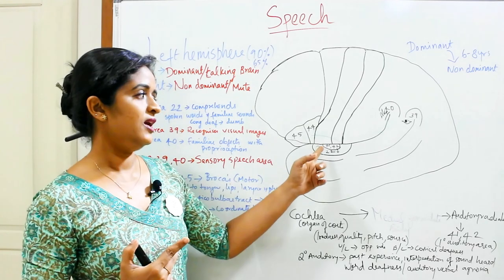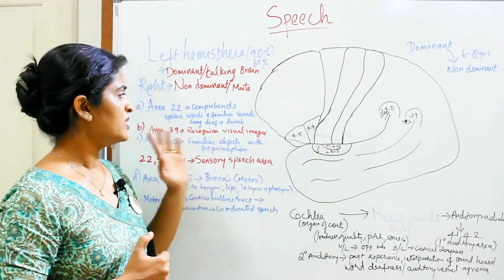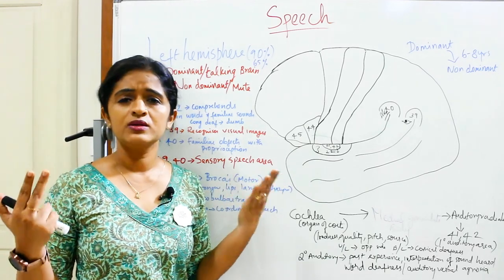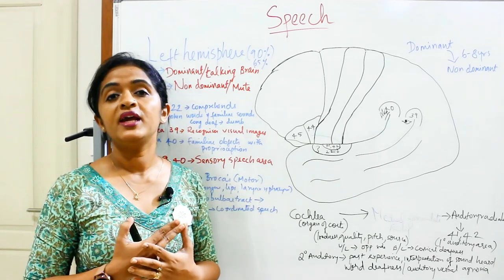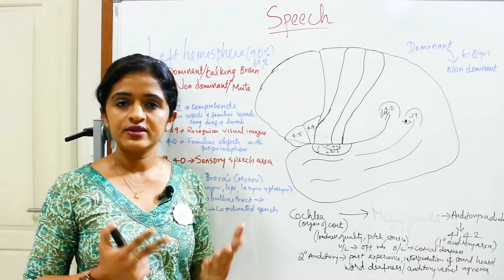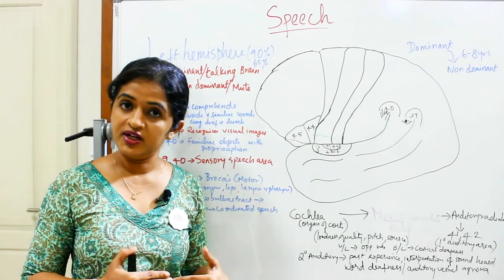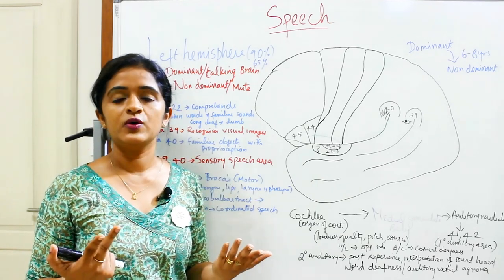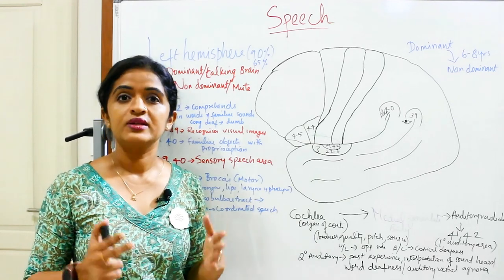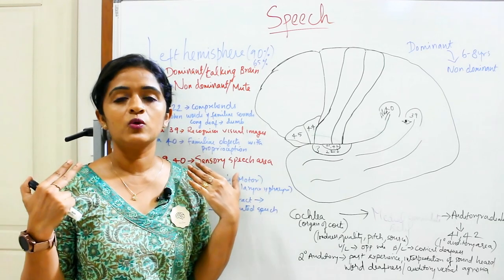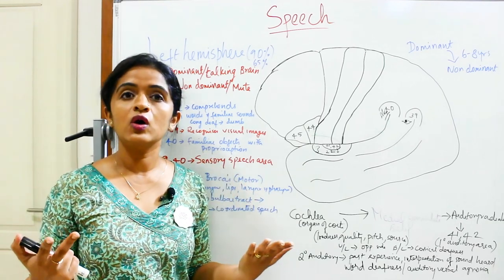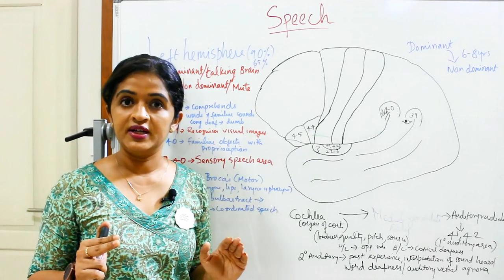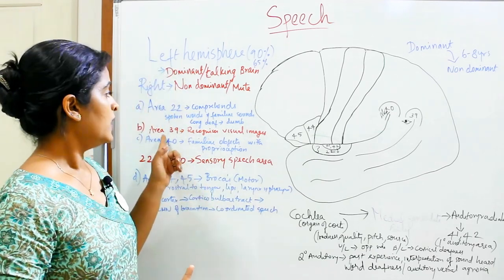Suppose somebody asks 'what is your name?' — you are able to interpret what you are hearing with the help of area 22. Now, suppose a child is congenitally deaf. Congenitally deaf means he is not able to hear anything. Even if his vocal cords are okay and his sound-producing muscles are intact, if he cannot hear sounds he won't be able to speak, because he doesn't know how to make a sound. That is why children who are congenitally deaf are usually congenitally dumb as well.